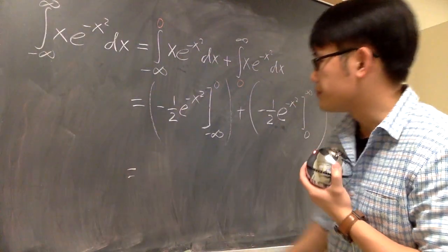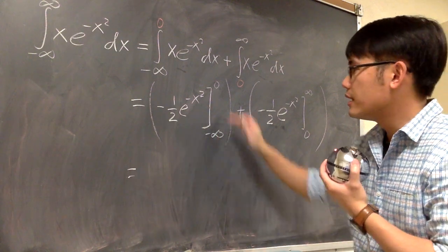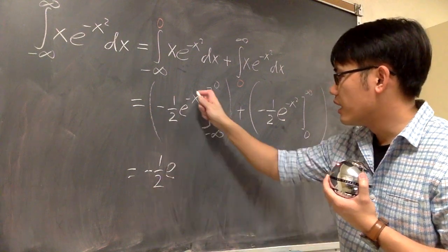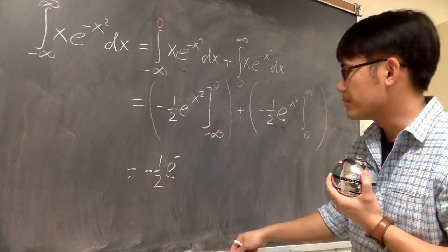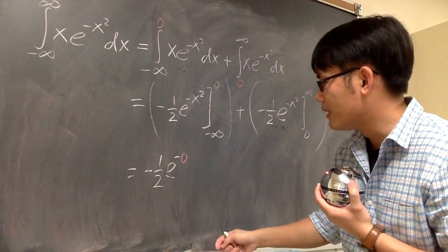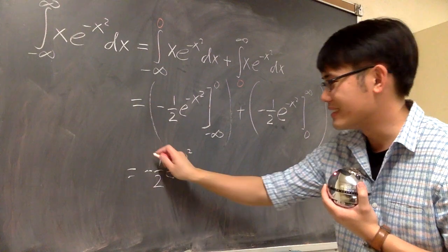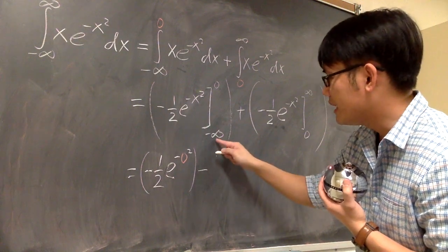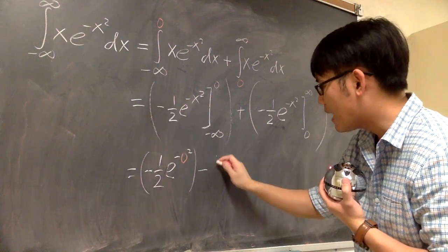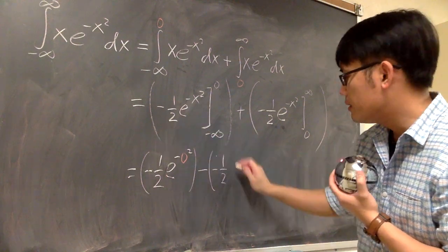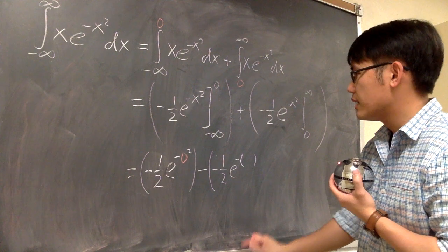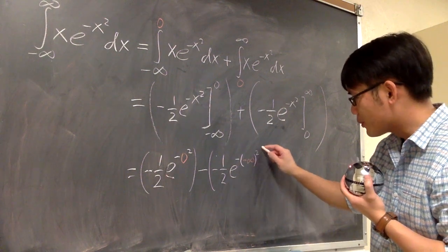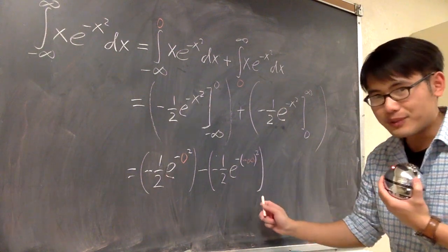For the first part, I plug in zero into x first and then subtract. So we get negative one-half times e to the negative zero squared. Then I subtract the result of plugging negative infinity into x: negative one-half times e to the negative (negative infinity) squared.